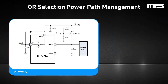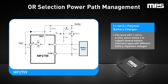With OR selection power path management, external switches manage the battery charging and system paths. This method optimizes energy storage capacity and provides protections in the event of a battery failure. OR selection power path management follows two basic principles. First, when an input voltage is present, that input voltage is connected directly to the system. Second, when VIN is absent, VBAT is connected directly to the system. The MP2759 is an example of a lithium ion, lithium polymer battery charger with OR selection power path management that can work with one cell to six cells, which allows it to support several battery chemistry types with different battery regulation voltages.